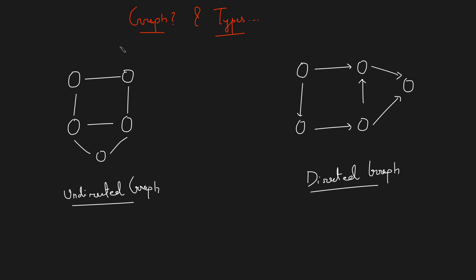A graph is basically a data structure which has two components. The first component is basically a node — this is known as the node and you can also call it a vertex. The second component connects two nodes or two vertices and is known as the edge. If I call one node u and the other v, then you can say there is an edge between u and v, and also an edge between v and u.